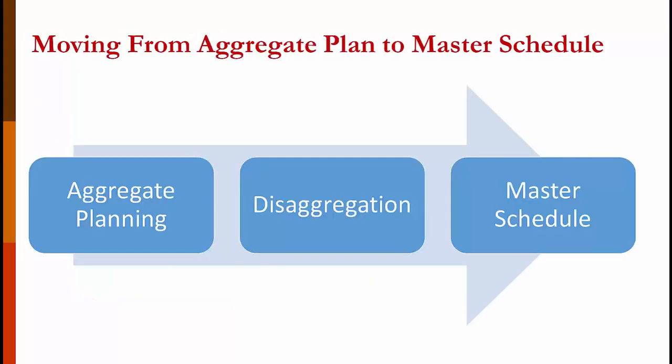We saw in a prior video how to develop the aggregate plan — that's basically a 5000-level view of production. You can't schedule people, machines, and material based on that view. We have to break it down into much more detail. That process is called disaggregation. Once you disaggregate the aggregate plan, you end up with the master schedule.